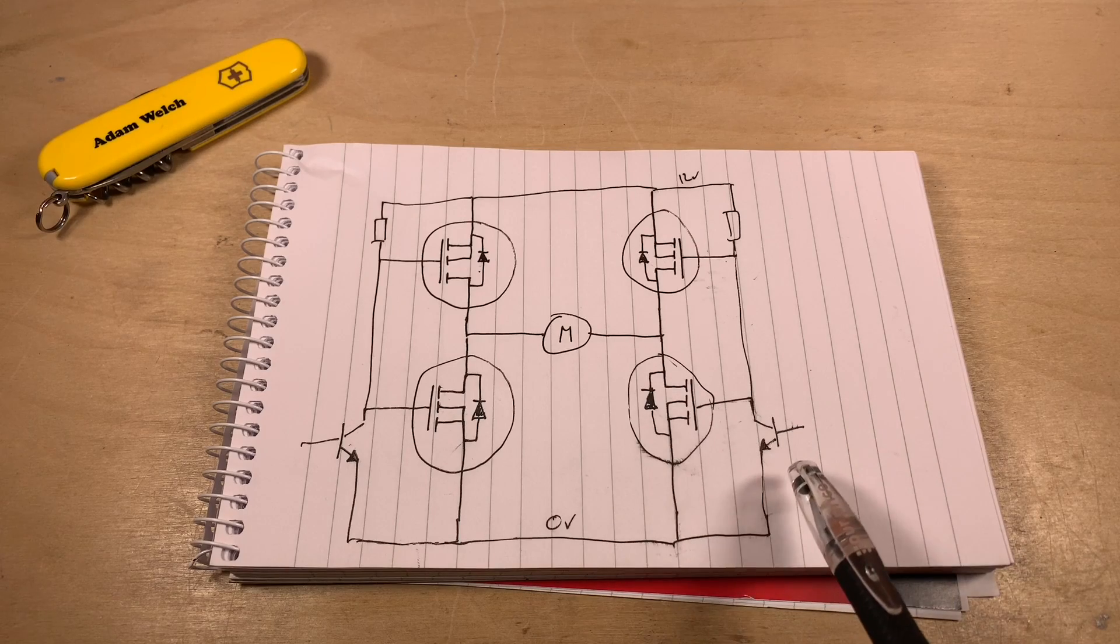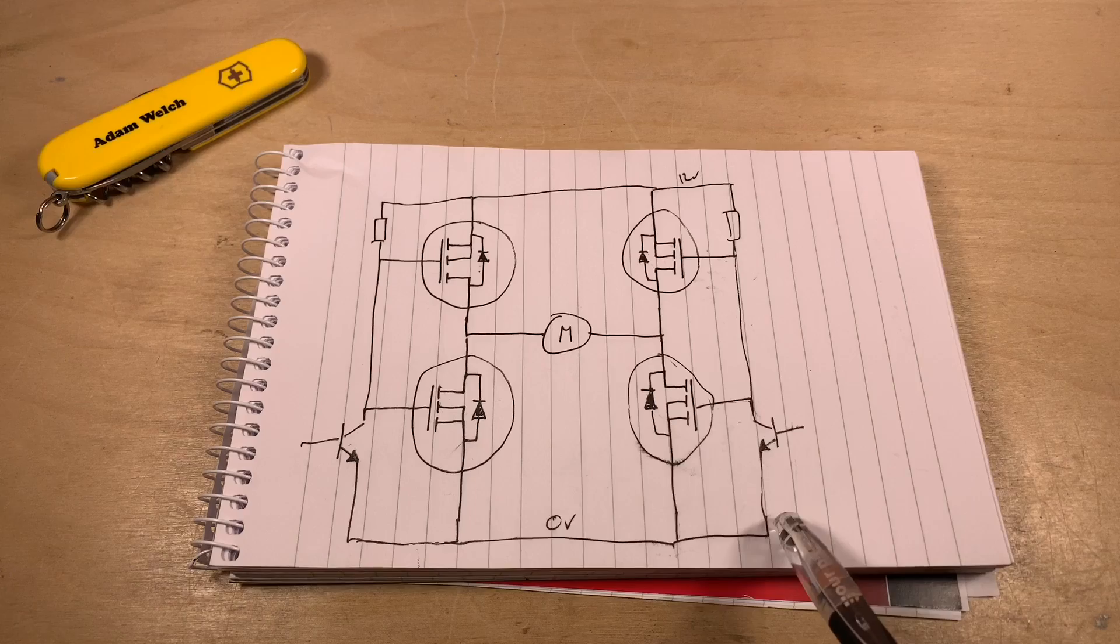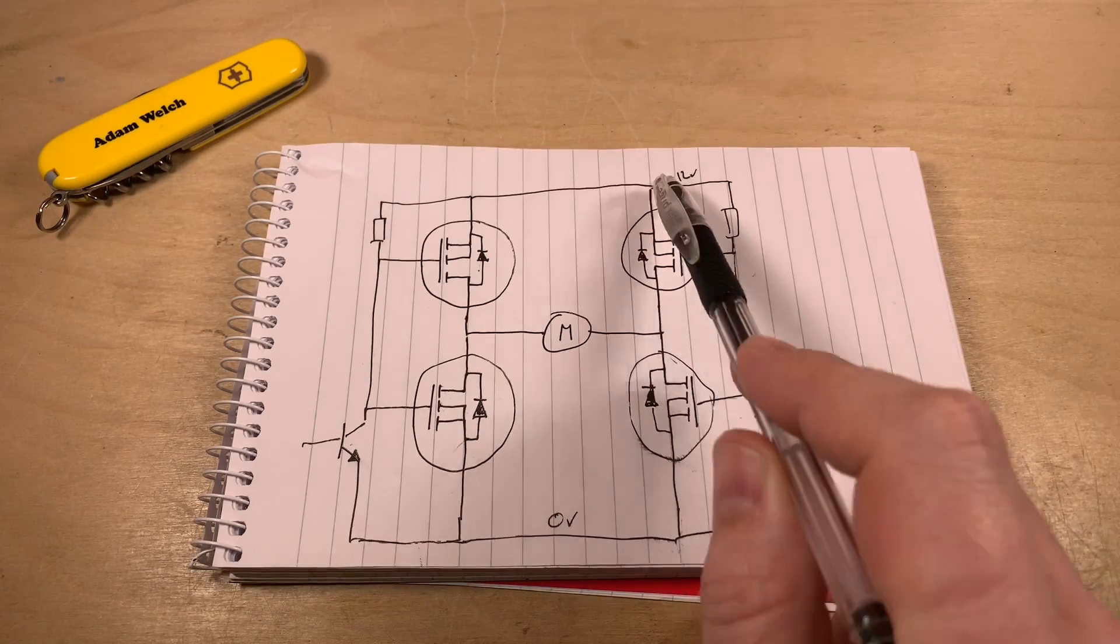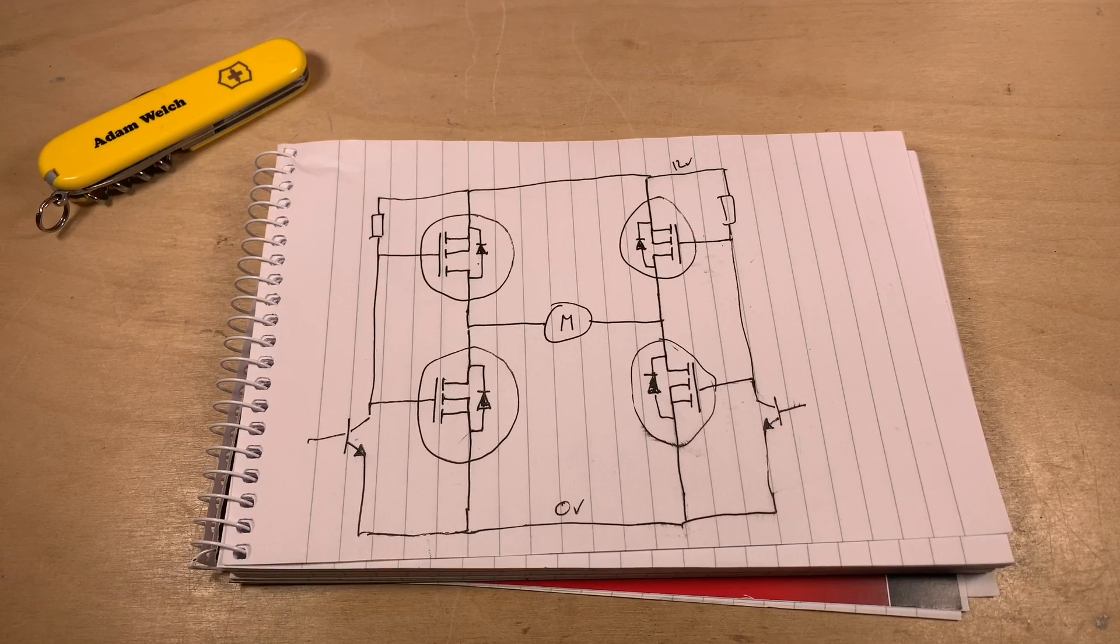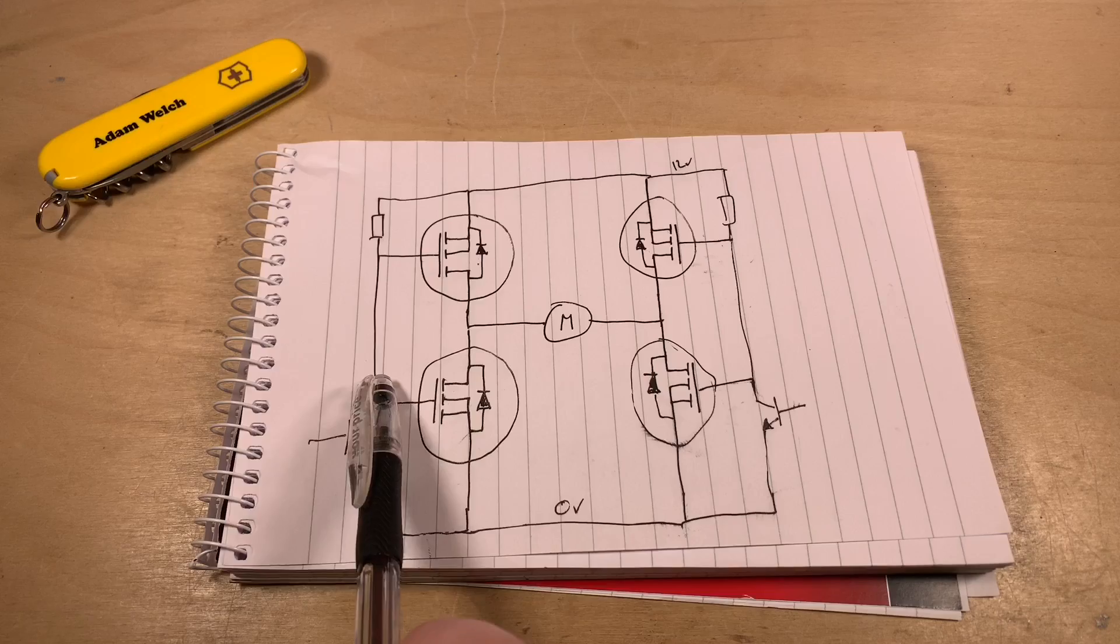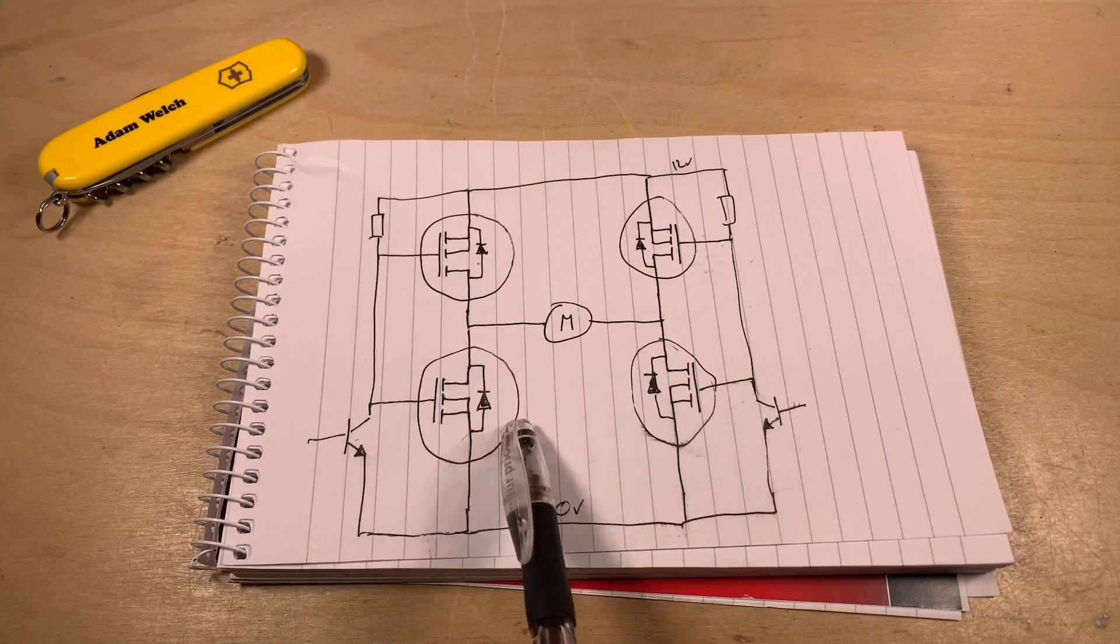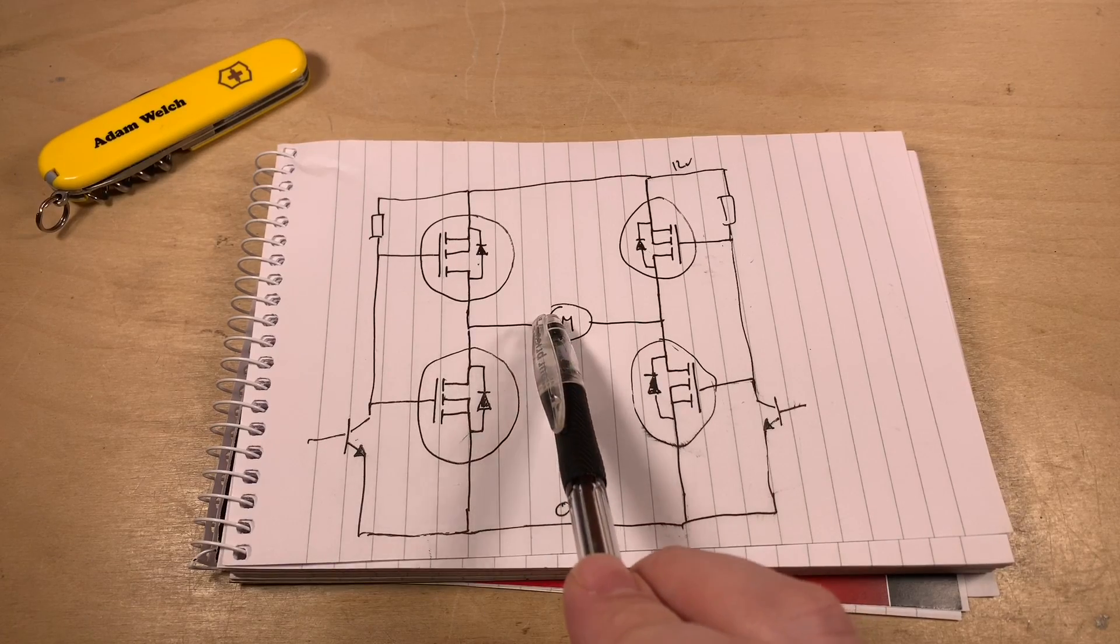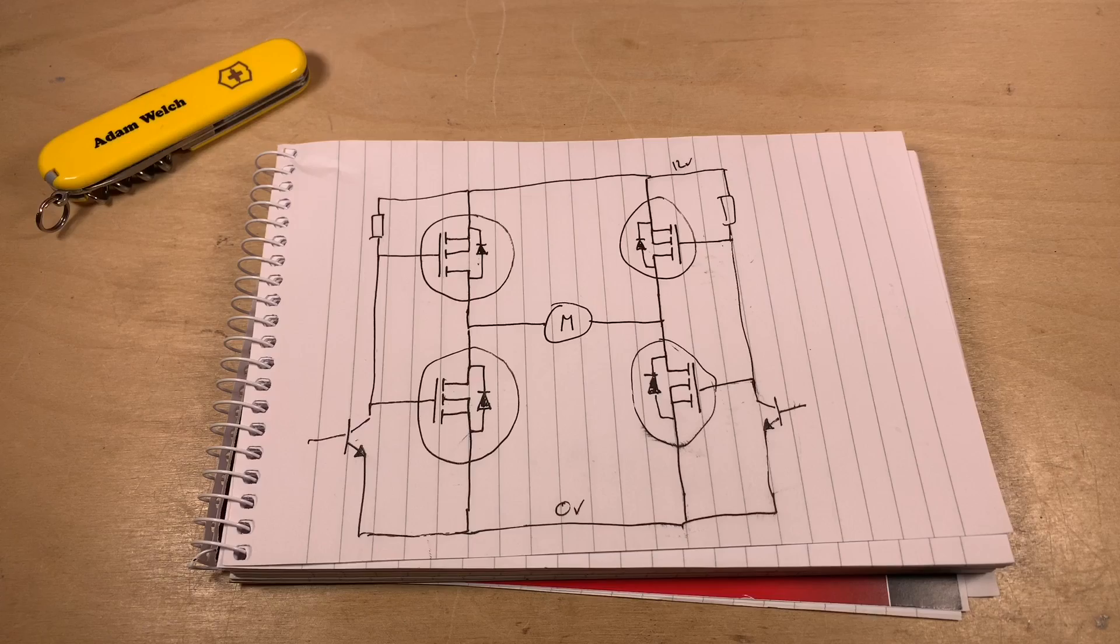So, for example, if we switch on this right-hand transistor, this will pull these gates down to zero volts, switching on this P-channel MOSFET, which attaches 12 volts to this side of the motor. This NPN transistor is not on, so the gates here are high at 12 volts, so this N-channel MOSFET switches on, connecting this side of the motor to ground. So the motor will now turn.